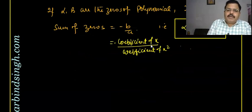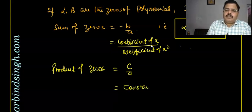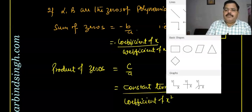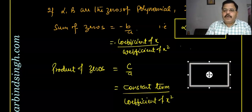Similarly, the product of zeros is c upon a. What is c? C is the constant term divided by the coefficient of x². So the product of zeros, alpha times beta, equals c by a — that is, constant term upon coefficient of x².